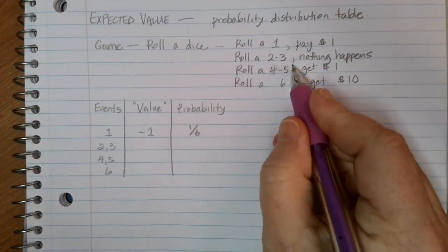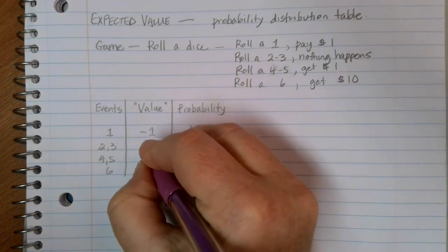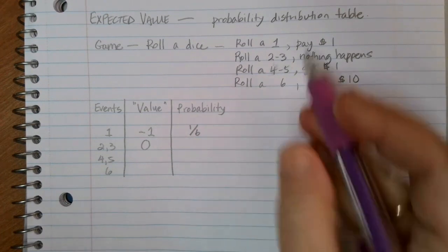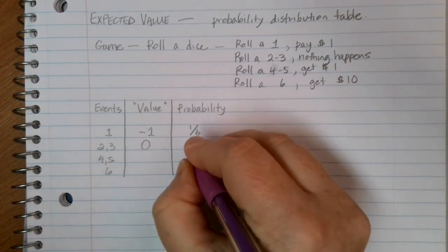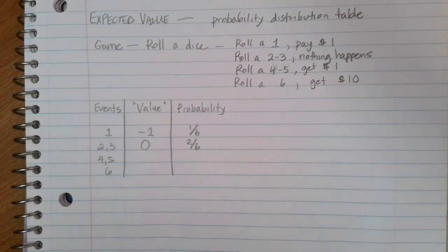If I roll a two or a three, nothing's going to happen. So the value of that roll is zero. What's the probability of that happening? Well, a two or a three, that's two different options out of six options on a dice.